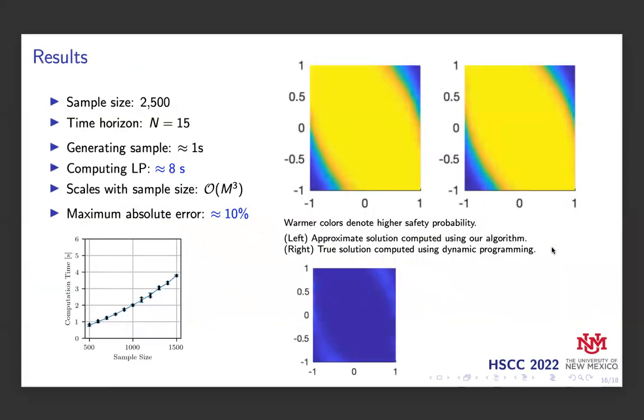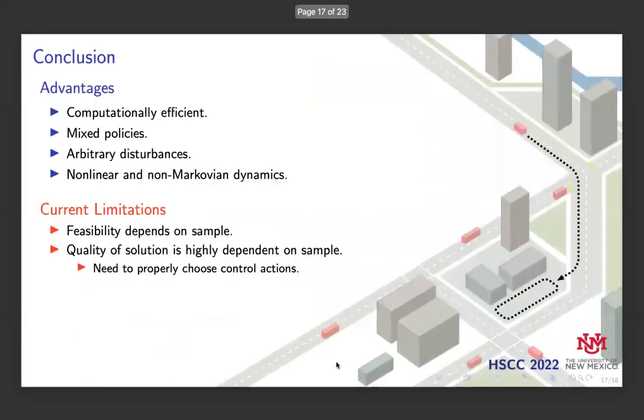Here we have a demonstration of this compared with the actual dynamic programming solution computed with known dynamics. On the left we have the approximate solution computed using our algorithm, and on the right we have the actual dynamic programming solution. The algorithm is very fast when compared with the dynamic programming approach, taking approximately eight seconds to compute a solution, while the dynamic programming solution was over 30 seconds. Also, our solution has low overall error, with a maximum error of about 10%, which is mainly focused right at the edge where the sample density is lowest.